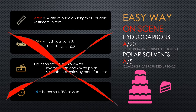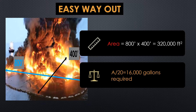If I want to do this on scene and add a little bit of a safety factor, it's much easier to do this math in your head. All I've done is turn the multiplication into a division problem after rounding it up. You go area divided by 20 for hydrocarbons, or area divided by 5 for polar solvents. Going back to our original example — an 800 by 400 foot crude oil spill, that's 320,000 square feet. Divide that by 20 since it's a hydrocarbon and I get 16,000 gallons of foam required. This is a slightly bigger number, but it adds a safety factor and ensures I have enough to put the fire out.